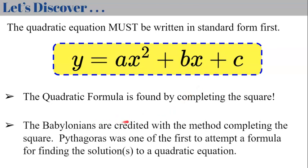The Babylonians are credited with the method of completing the square. Pythagoras was one of the first to attempt a formula for finding solutions to a quadratic equation, but it was the Babylonians who discovered it. Your teacher may simply expect you to understand that this process happened and that it's where the quadratic formula came from.